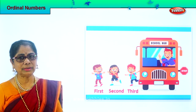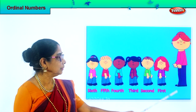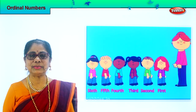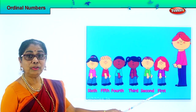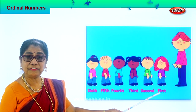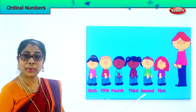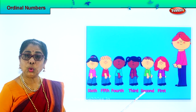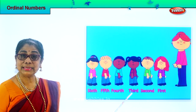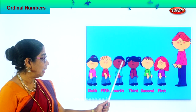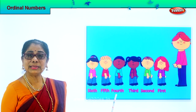Shall we look at another picture? Look at this. The teacher will say, come on, stand in a queue. And the first little girl says, I'm first. Spell first: F-I-R-S-T. First. And here the second little girl, spell second: S-E-C-O-N-D. Second. And here the third little girl, spell third: T-H-I-R-D. Third. And here the little boy says, I'm fourth: F-O-U-R-T-H. Fourth.